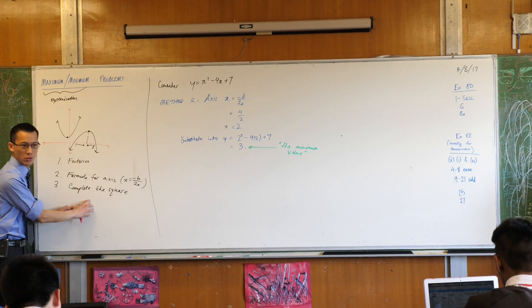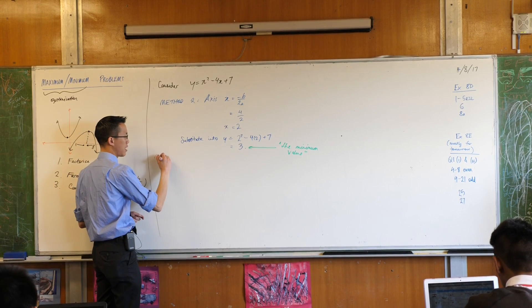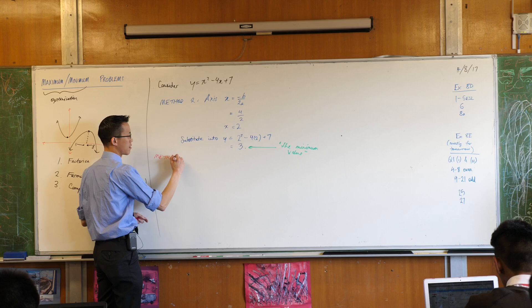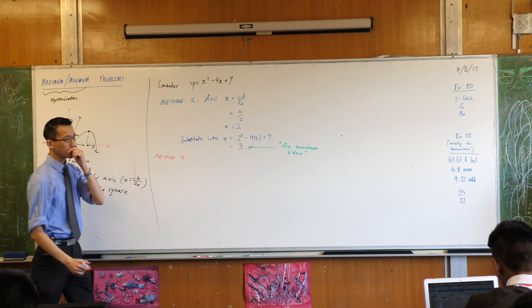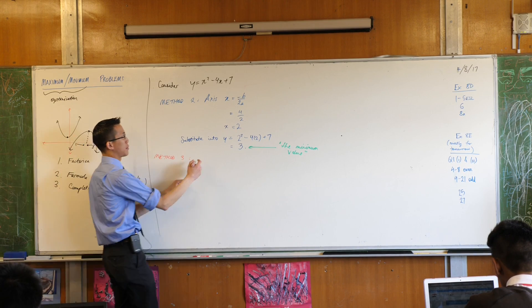Now if I wanted to use this completing the square thing, how does it actually work to help us? Y equals blah blah blah blah blah blah.